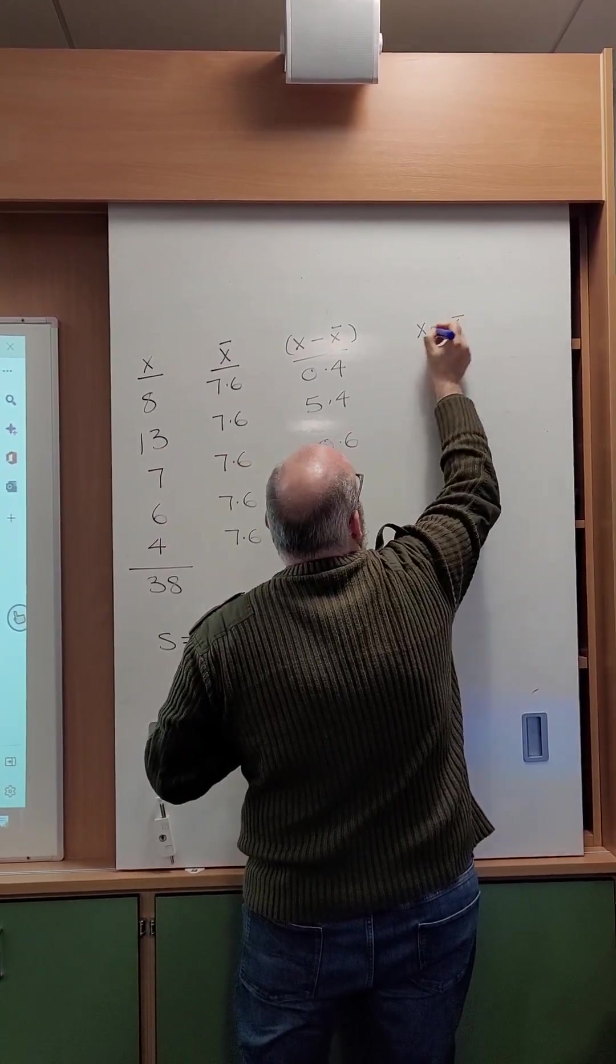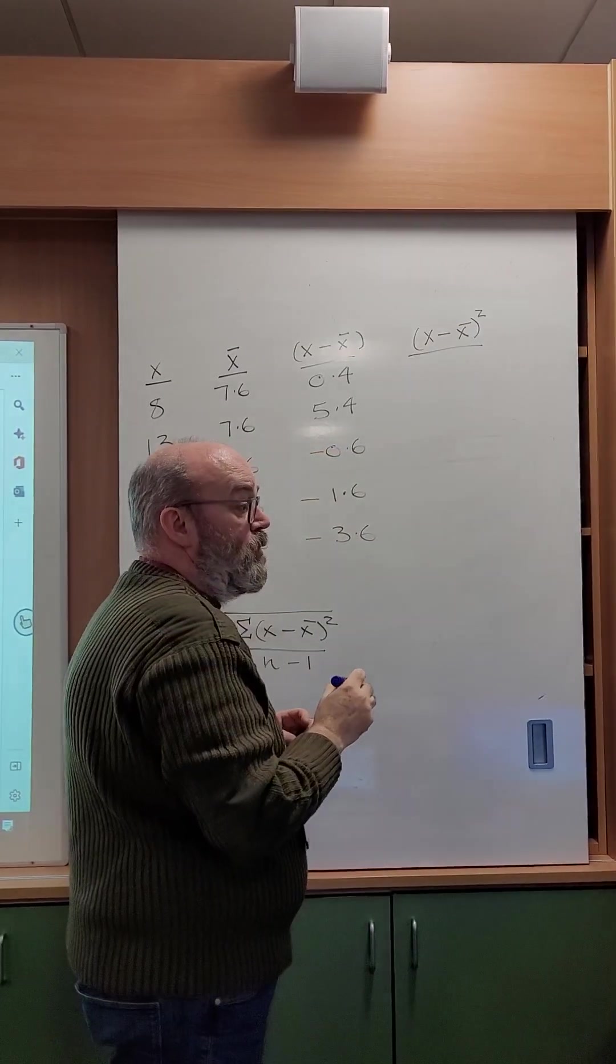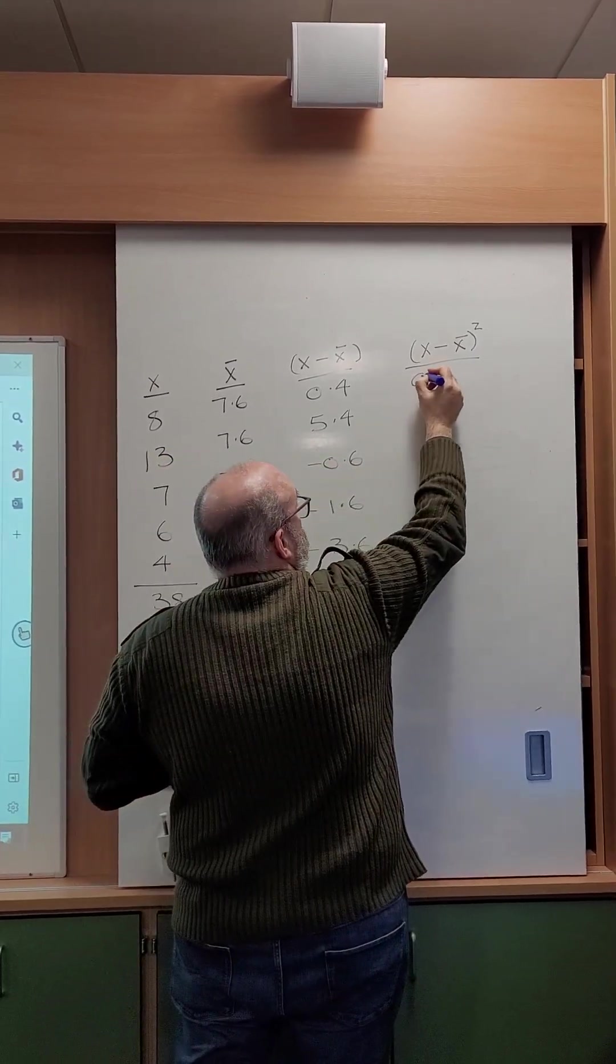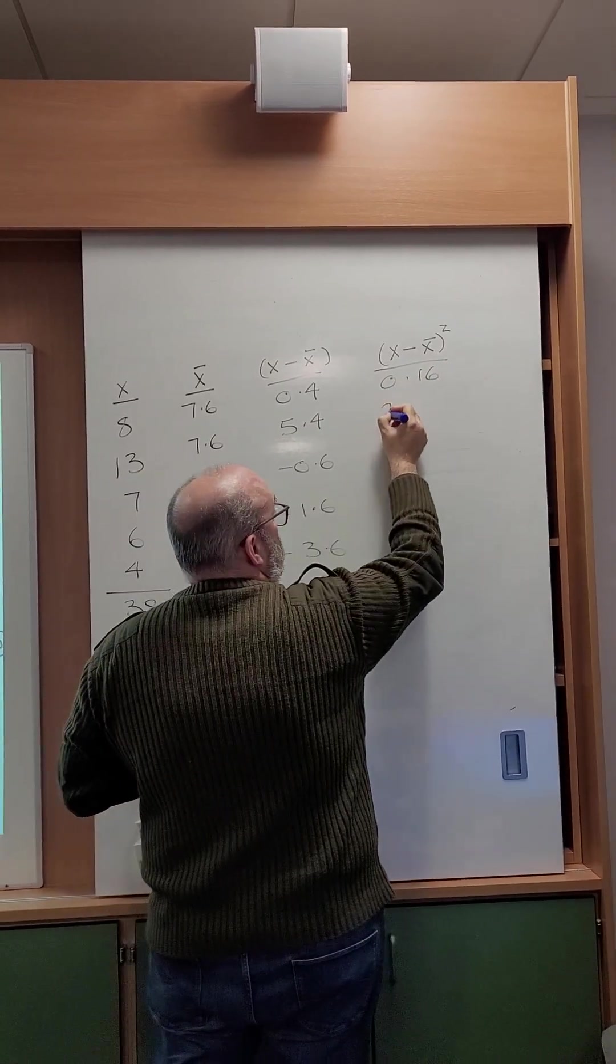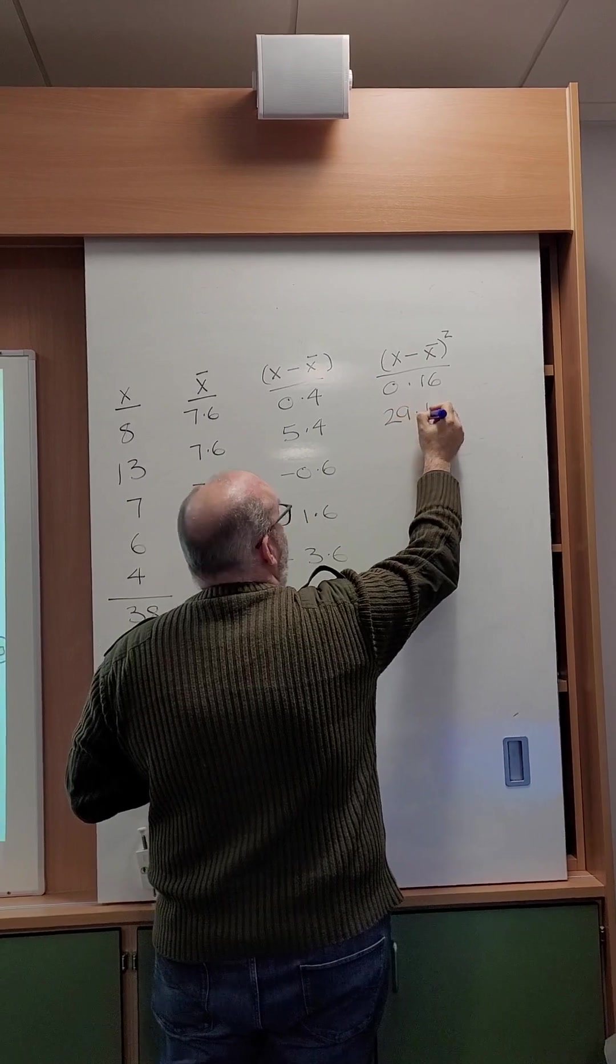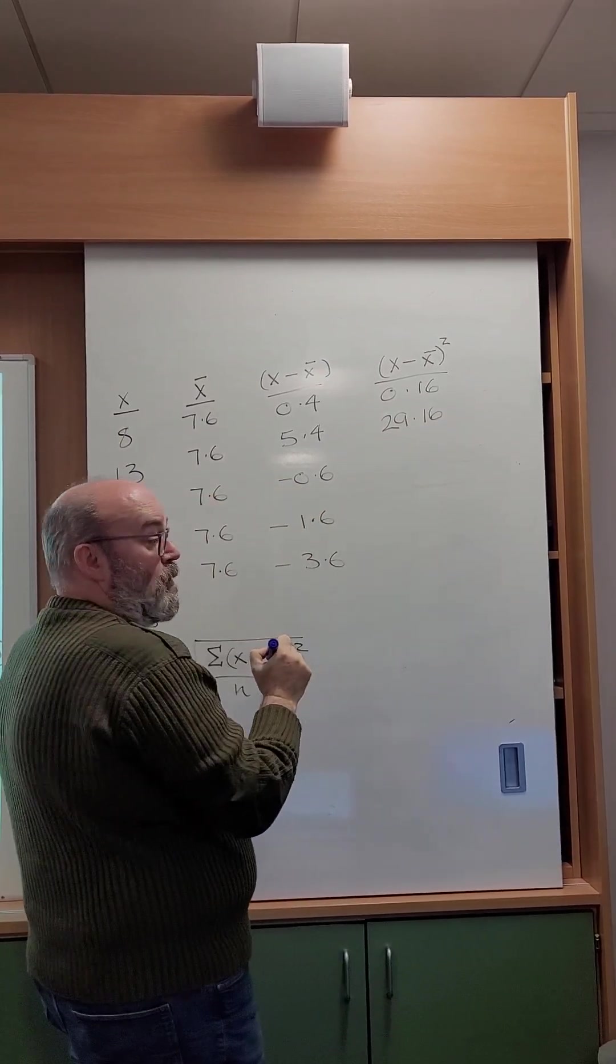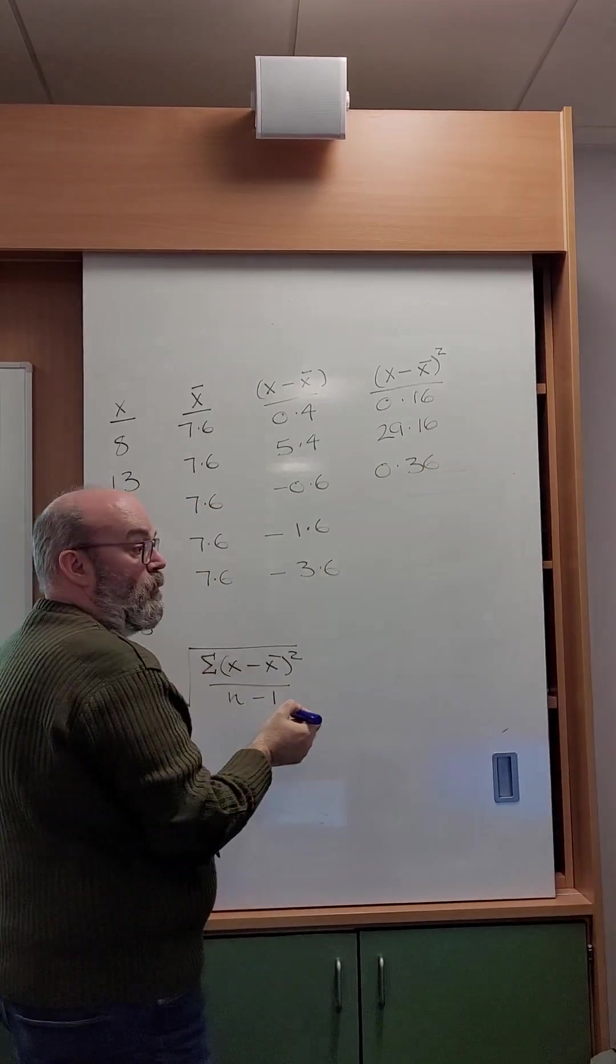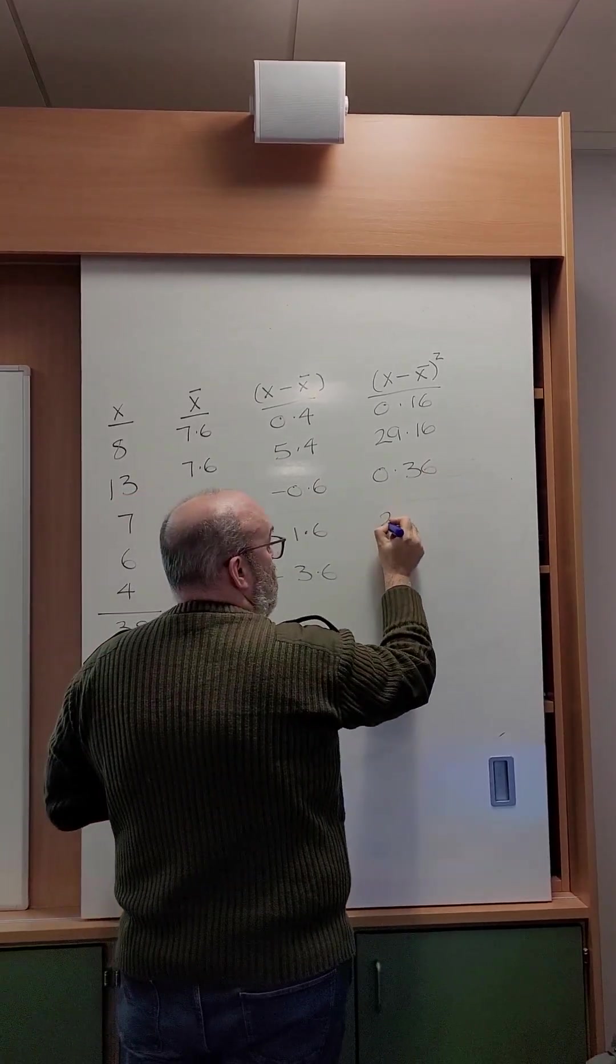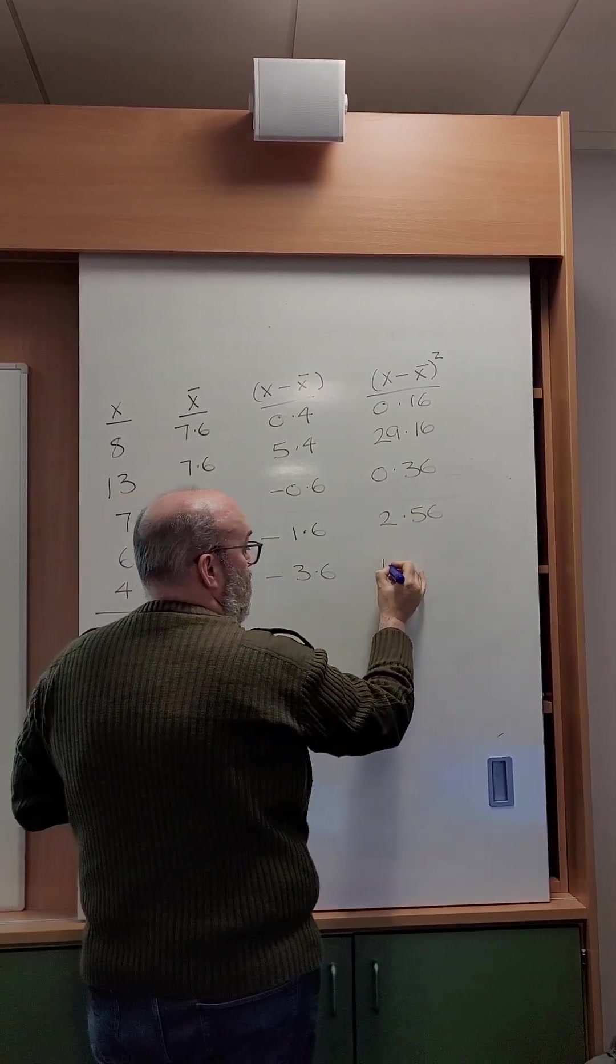So X minus X bar all squared, that's therefore going to be 0.16, that's going to be 29.16. And yes, I do have an off-camera list of numbers. 0.36, that's going to be 2.56, and that's going to be 12.96.